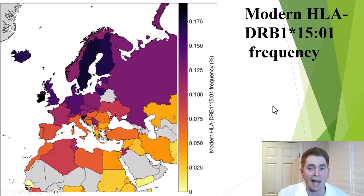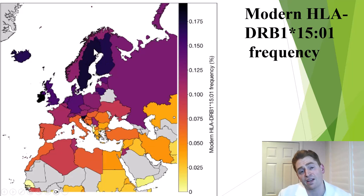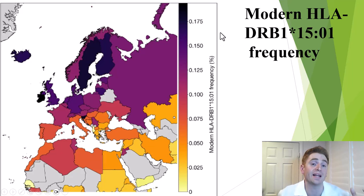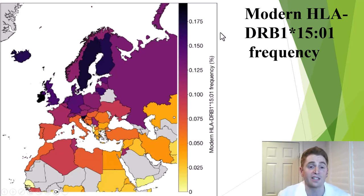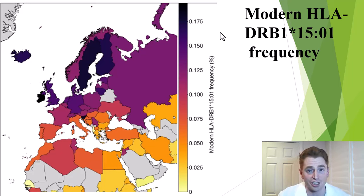This is a modern map of HLA-DRB1*1501 frequency, and you can see it's more common in areas of Northern Europe like Sweden and Finland, where MS is also more common. Be careful though — there are confounders. This is also associated with sunlight exposure and low vitamin D levels, which are known risk factors for MS. But certainly there's an association.